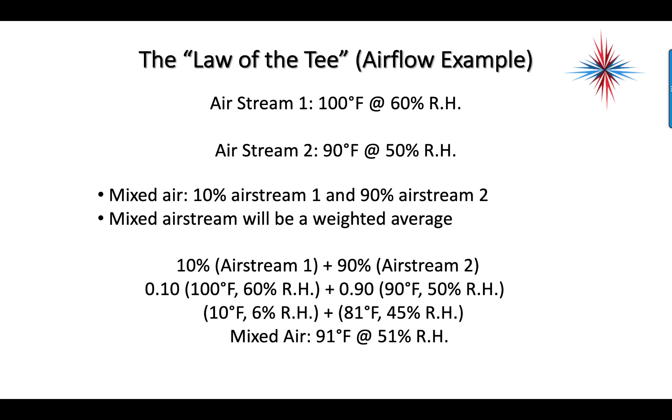So multiply the 100 times 0.1 and the 60 times 0.1 - again, 10% equals 0.1 - and we come up with 10 degrees at 6%. We take 0.9 times 90, we get 81. We take 0.9 times 50, we get 45. Now we add those two together - we have our mixed air at 91 degrees Fahrenheit and 51% relative humidity. Try it on your own examples and see what comes up.